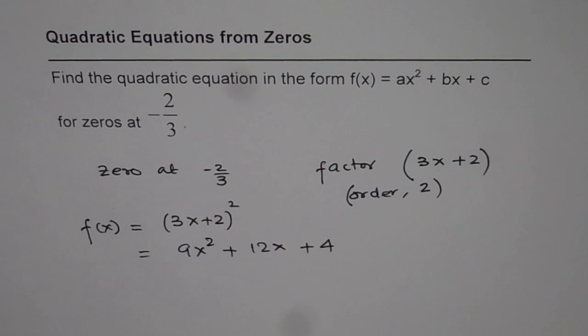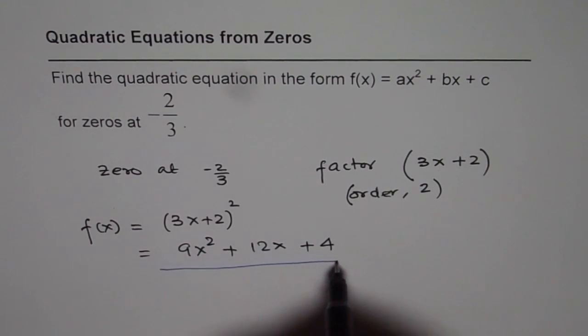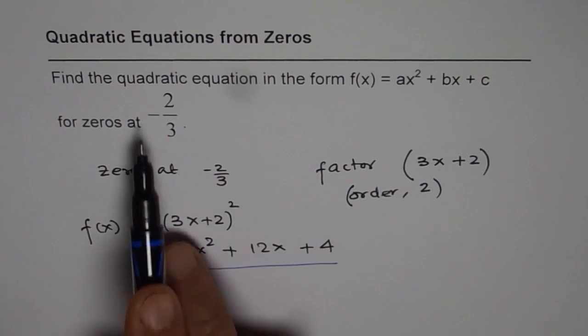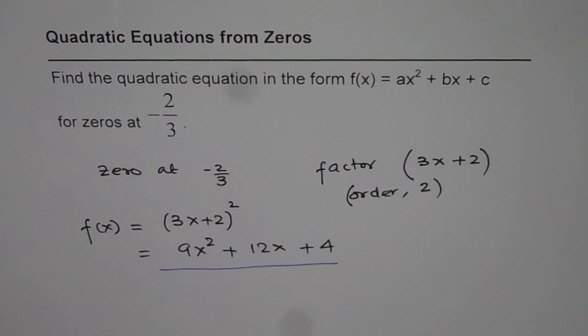So that is the answer. This particular quadratic equation will have a zero at -2/3. So that is how we can get our answer.